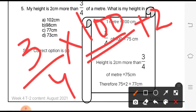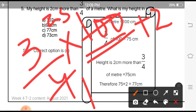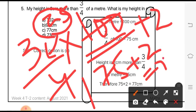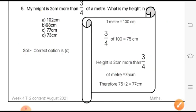That is why we multiply 3 by 4 by 100. When we multiply, we can see here cancellation is possible. We get 25 when we divide 100 by 4. Then multiplying 25 by 3, we get 75. And 75 plus 2 is 77. That means the height is 77 centimeters. So the correct option is option c.